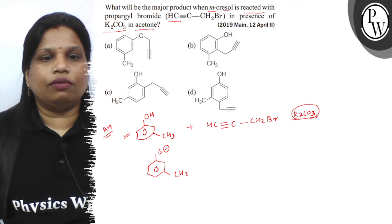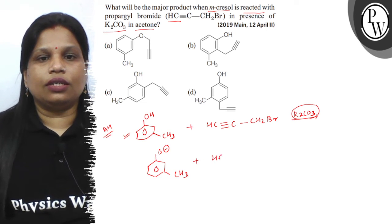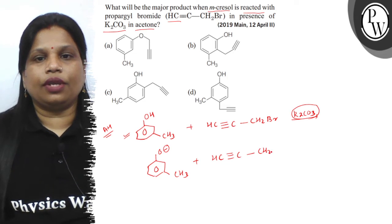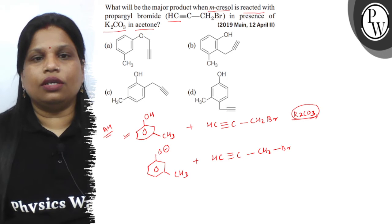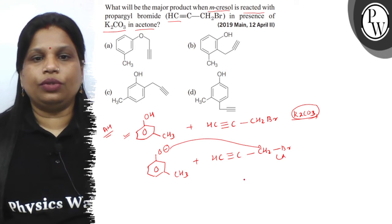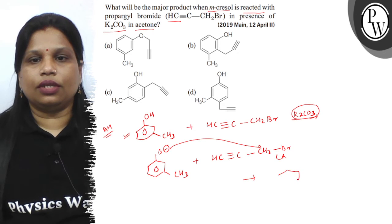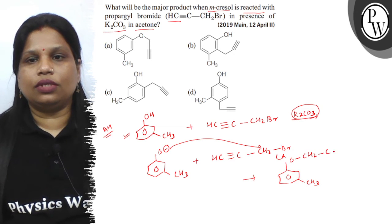And which will have a nucleophilic substitution with propargyl bromide. And therefore, the product is the respective product in which OCH₂ C triple bond CH.